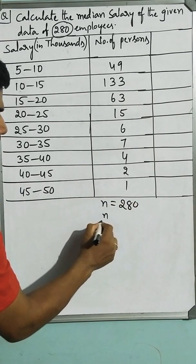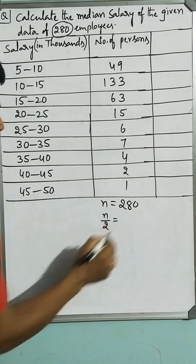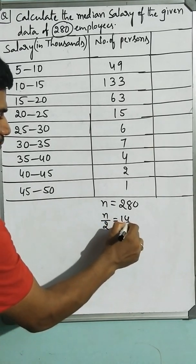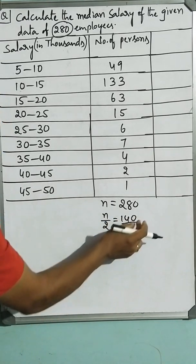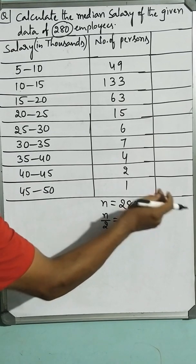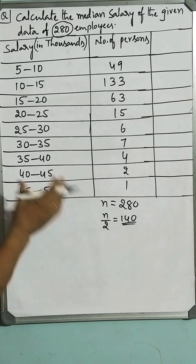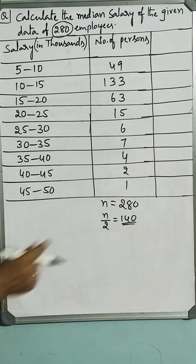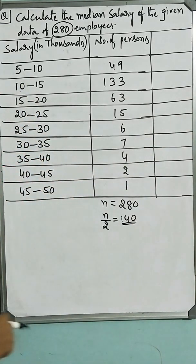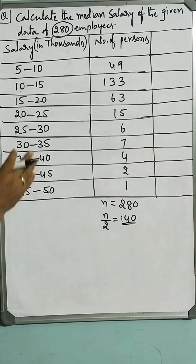Then half of this value, that is 140, which means that 140th person and 141st person is getting the median salary. What is their salary approximately? Let us go for the solution by group data formula.